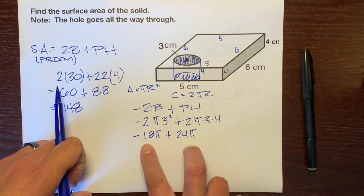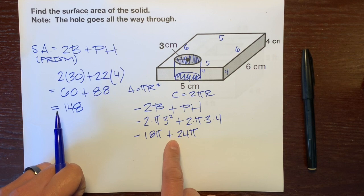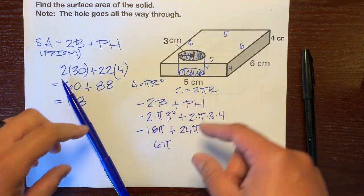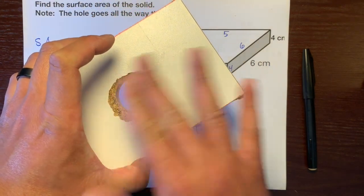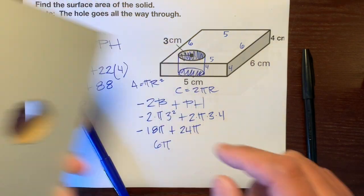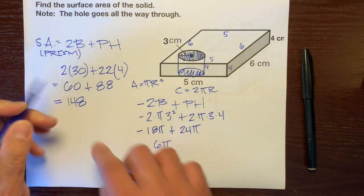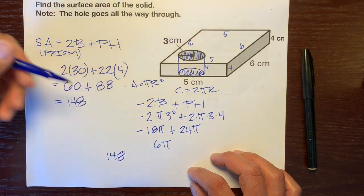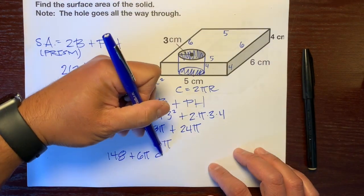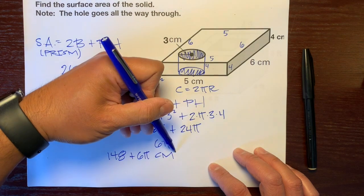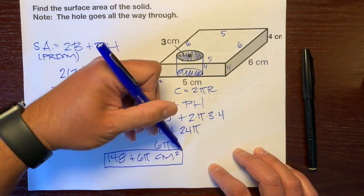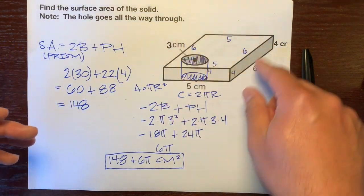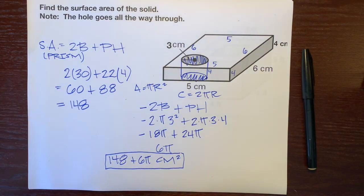So now we have the surface area. We subtracted the two circles — taking away this surface and taking away this surface — but added this new surface on the inside. We take this value and add it to the total surface area of that prism. So we have 148 + 6π, and it's in centimeters squared. That's how you find the surface area of a prism with a cylindrical hole right through it. Hope it helps.